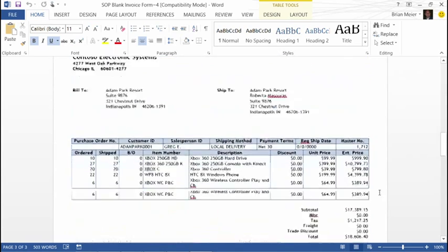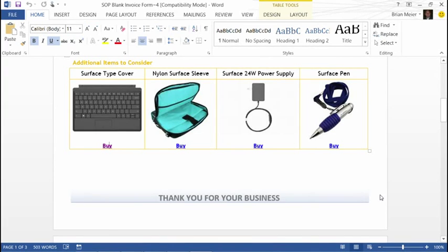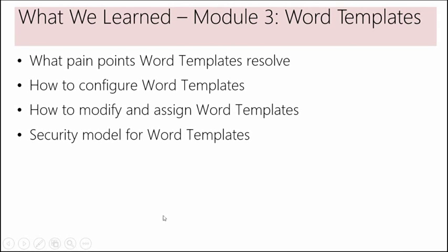That's an easy example of how I can take these modifications and make them to the report without ever having to touch the underlying Report Writer report. I wanted to give you an example up front of what Word templates are, the power of the Word template, and what you can actually do with them. Word templates were created as a way for people to quickly make modifications to those Report Writer reports — making simple changes easy — without ever actually touching the report.